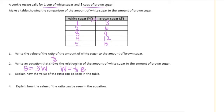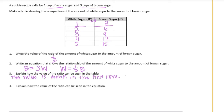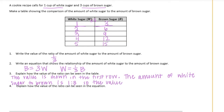Explain how the value of the ratio can be seen in the table. The value is shown in the first row — the amount of white sugar to brown sugar is one to three in the chart, so the value is one-third.